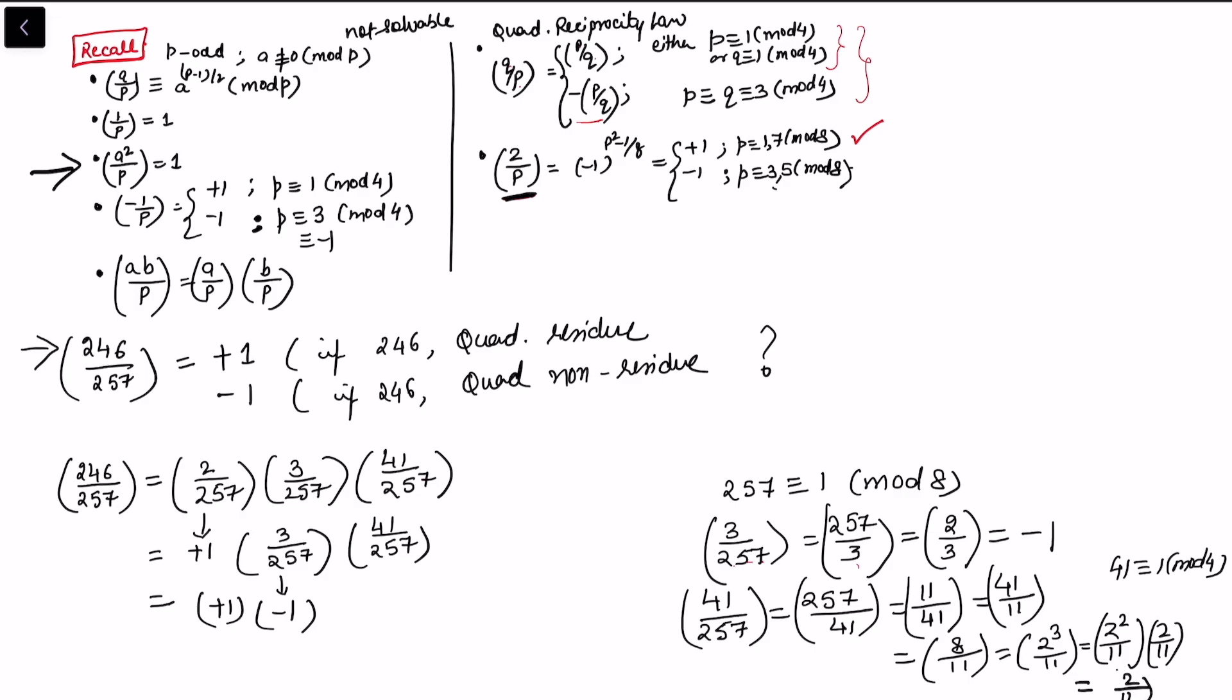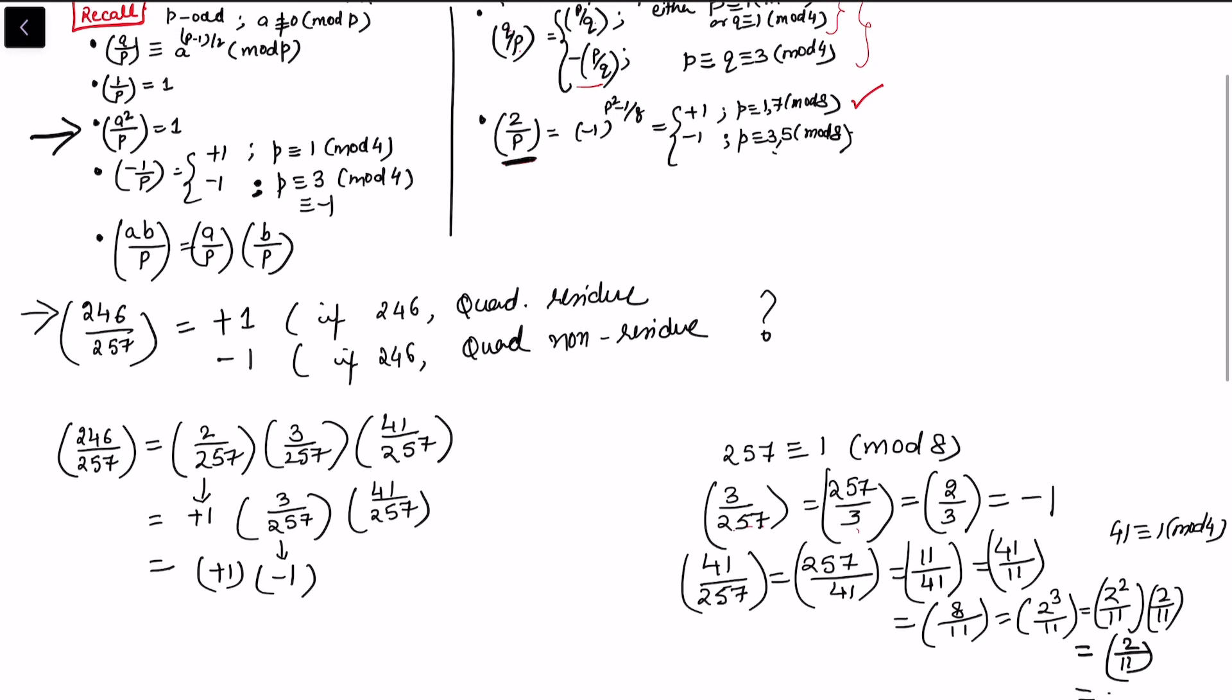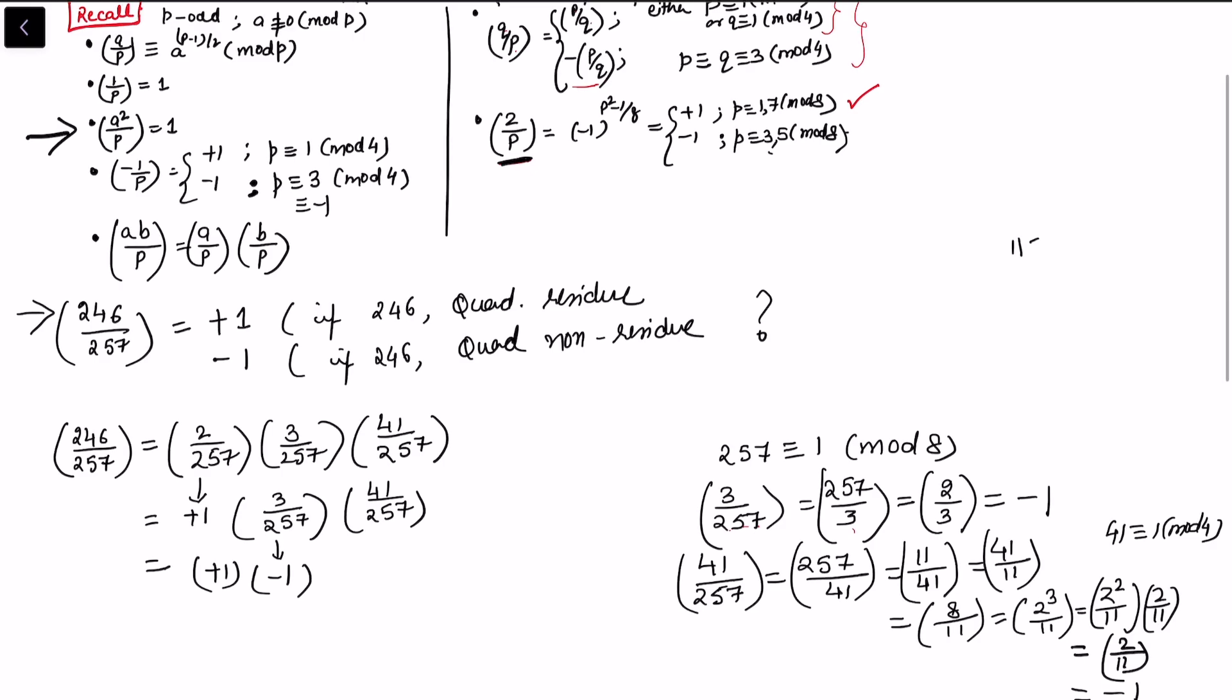Now the square term will always give me the expression as 1, so we are left with only (2/11). Now (2/11) will give me -1 because we can see that 11 ≡ 3 (mod 8), so from the second property (2/p) = -1. So this value is -1.